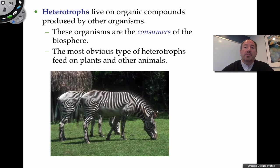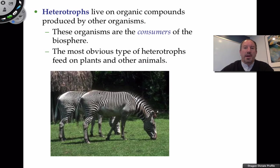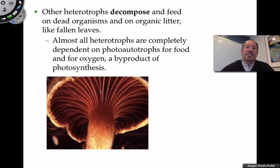Heterotrophs, like us — hetero means 'other,' so eating something else — live on the organic compounds produced by autotrophs. We're consumers. We either eat autotrophs directly or we eat others. If we're primary consumers, we're eating the autotrophs directly. If we're secondary consumers, we're eating the primary consumers. So we're clearly dependent upon the autotrophs. There's also another class of heterotrophs called decomposers — organisms that eat dead organisms or organic litter like fallen leaves.